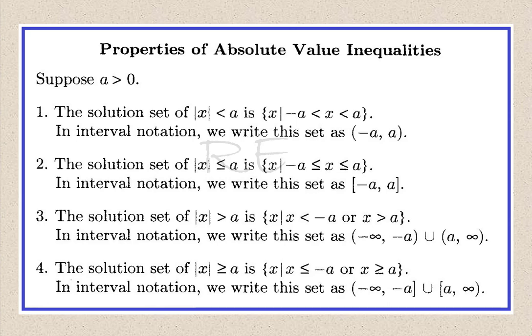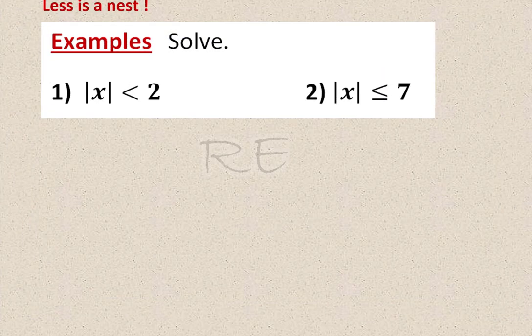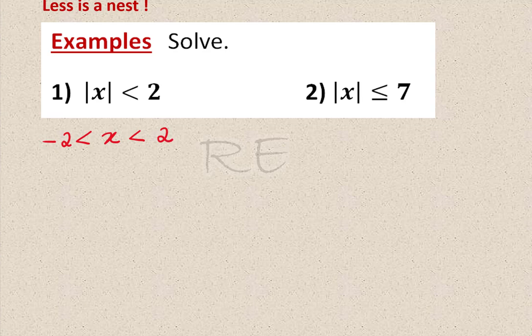Feel free to pause and look at the complete table of properties of absolute value inequalities. Applying 'less is and': the absolute value of x less than 2 means x is strictly between negative 2 and 2. And the absolute value of x less than or equal to 7 gives negative 7 less than or equal to x less than or equal to 7.